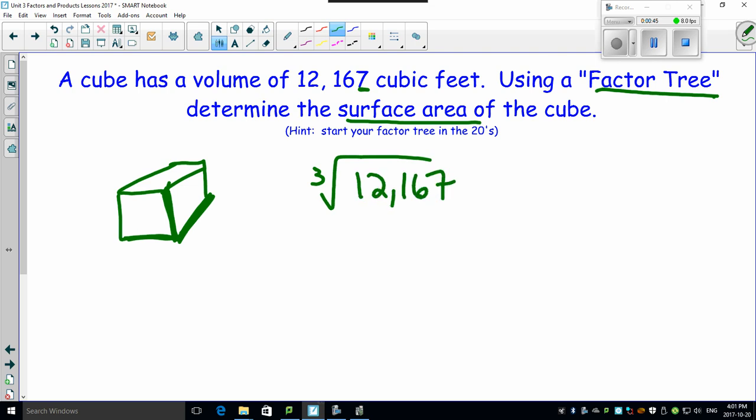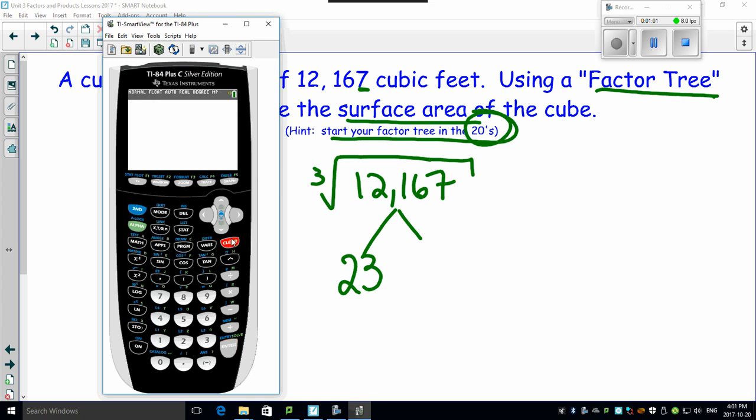Okay, well, look what this says. It says hint, start your factor tree in the 20s. Well, I'm going to give you a little bit of a hint. I'm going to break this down, and I'm going to tell you right away it's 23. How do I know it's 23? Well, one of the reasons why is I'll bring up my calculator here.